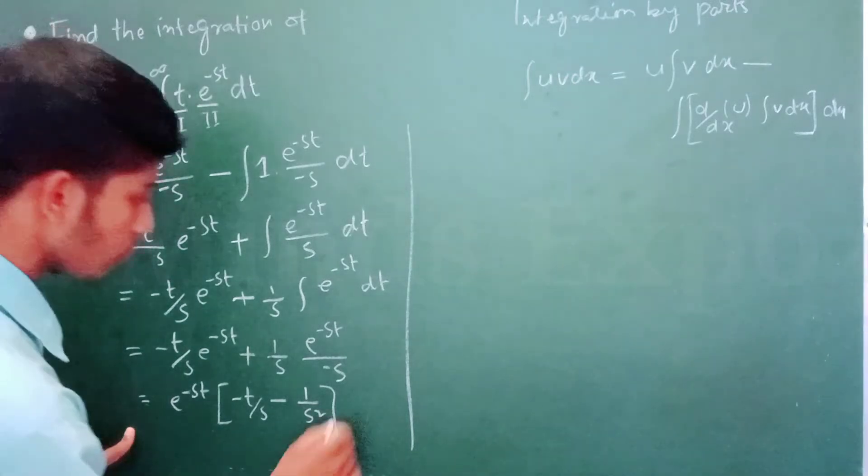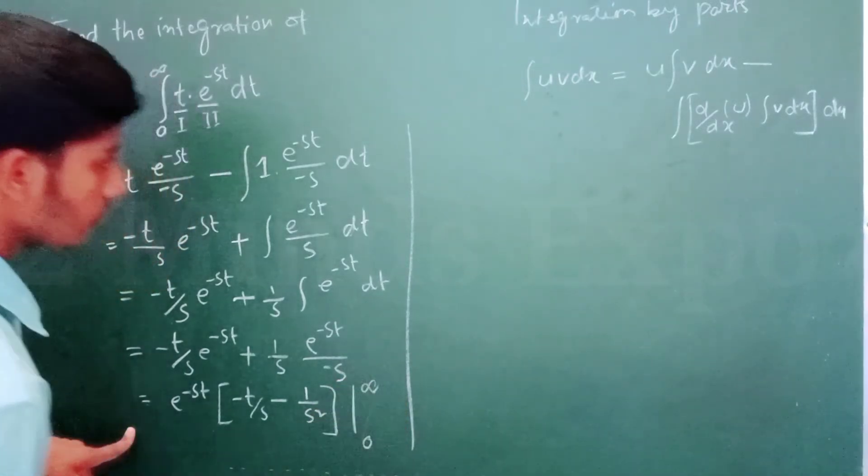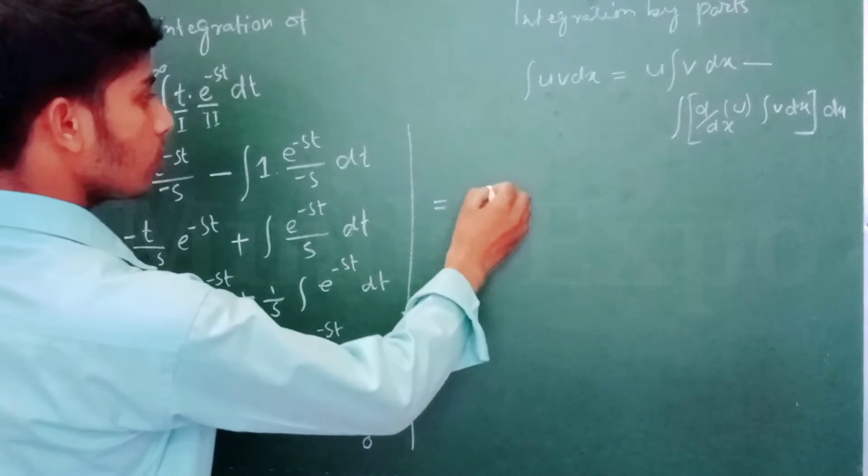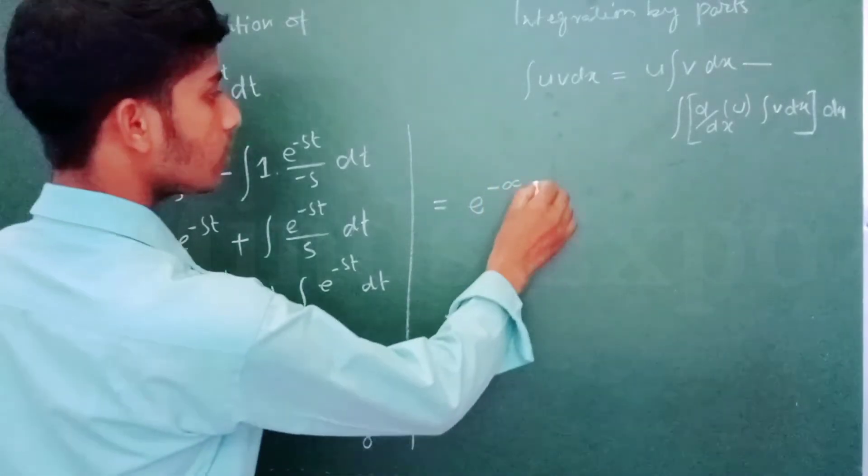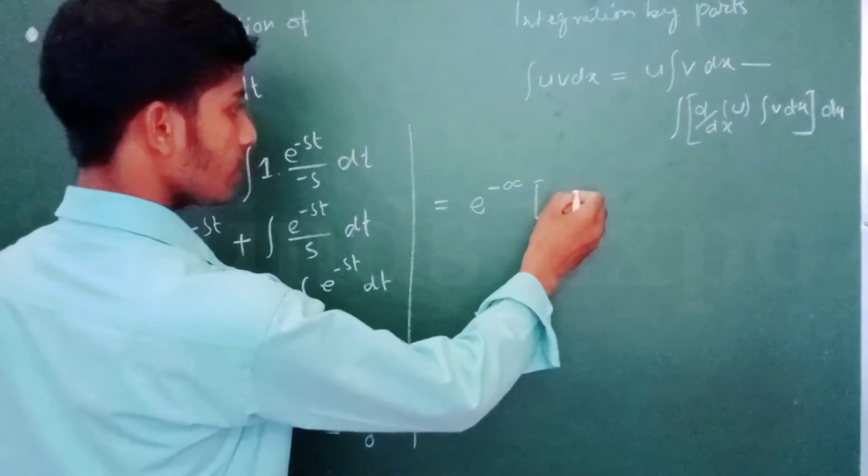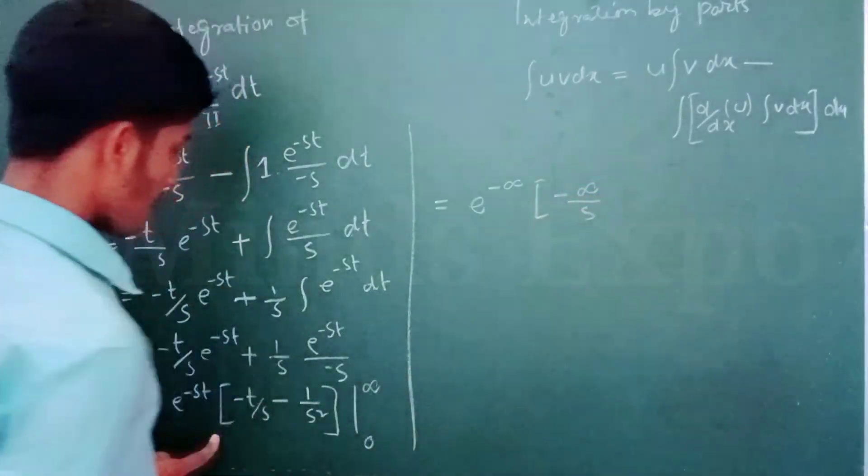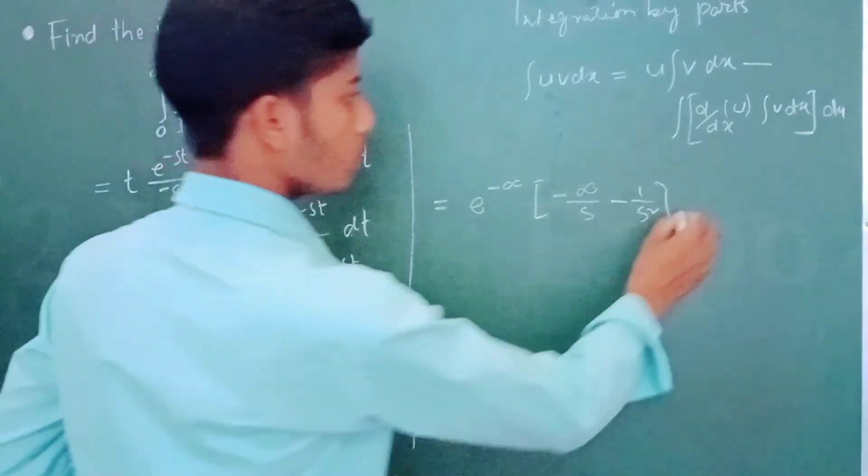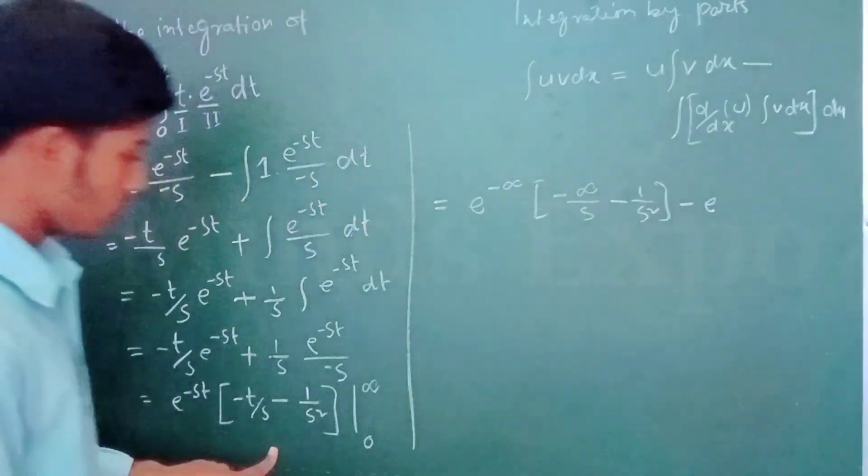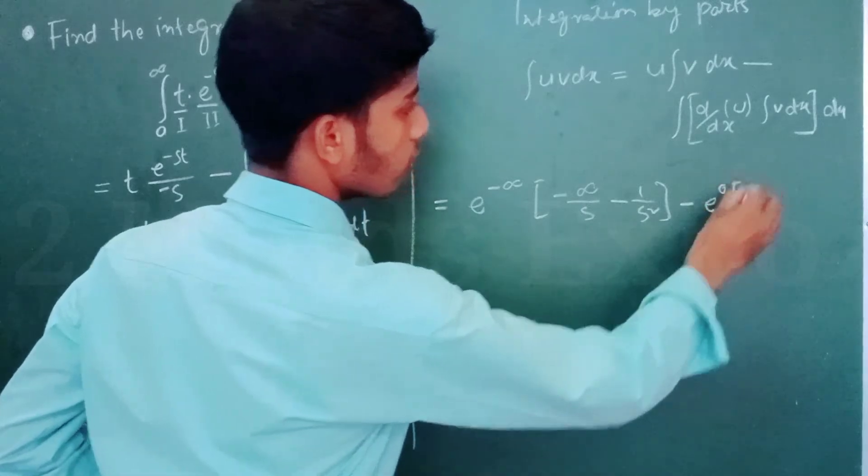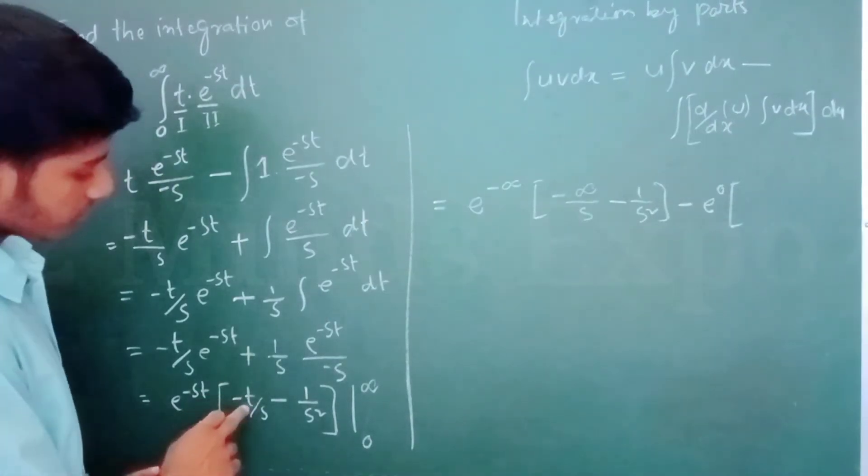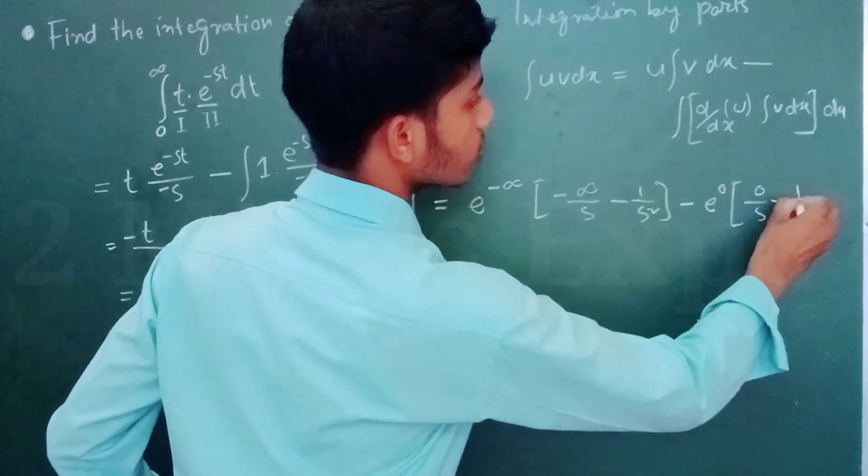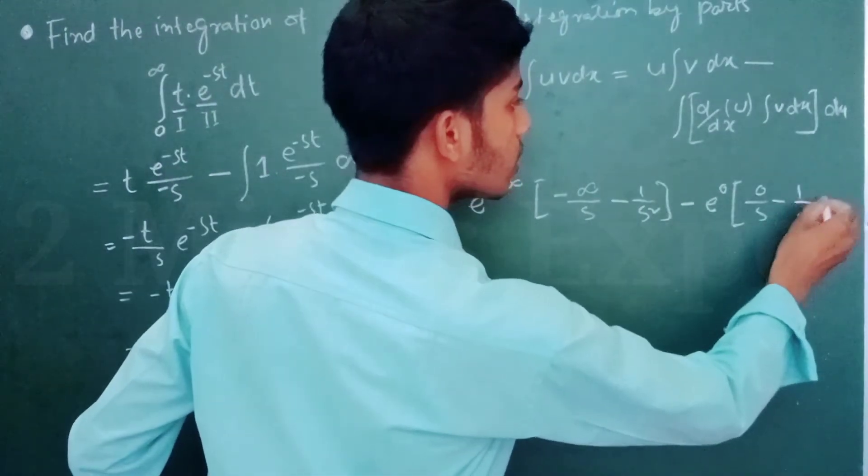Now if we put the limit 0 to infinity, so then e to the power minus infinity bracket minus infinity by S minus 1 by S square minus e to the power 0. Also minus T by S, I mean 0 by S, minus 1 by S square.